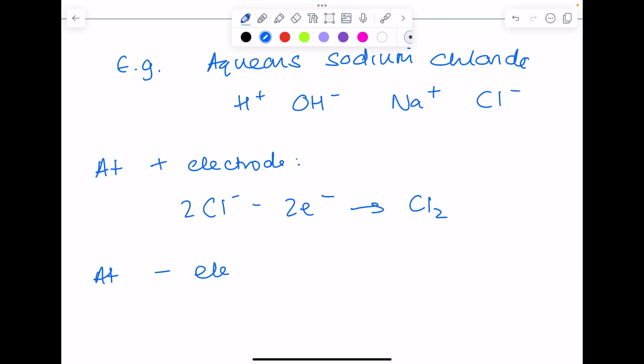At the negative electrode, so at the cathode, you'll have to pick between these two ions and remember it's going to be hydrogen that discharges because it's less reactive than sodium. So that's your rule at the negative electrode. And here we can see reduction occurring.